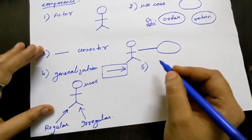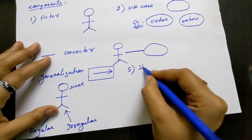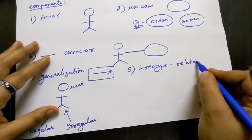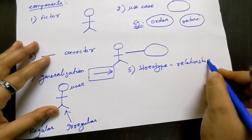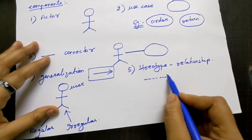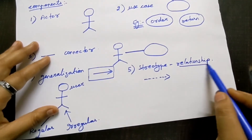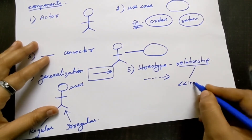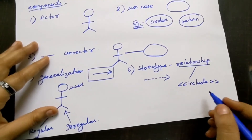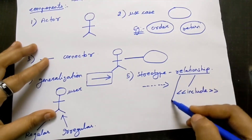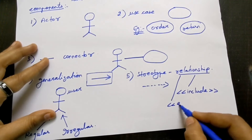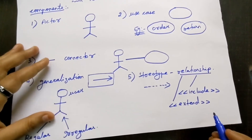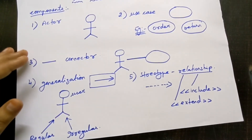The last component is stereotype, which represents a relationship. It is shown by a dotted arrow. In relationships, you have two types: include and extend. We need to understand what each one means.